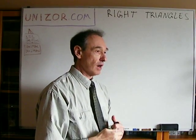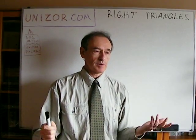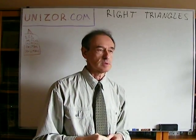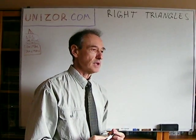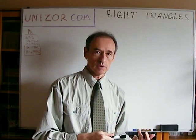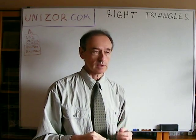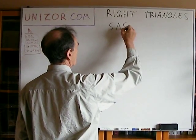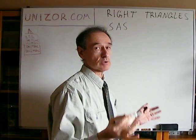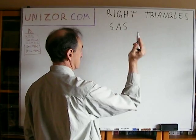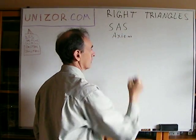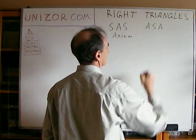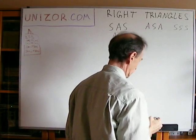Now we are still talking about right triangles, and what's more important about triangles than theorems about their congruence? Let's talk about congruence between two different right triangles. Certain things follow from the general theorems about congruent triangles — or axioms, actually. We have three major statements about congruence of general triangles: side-angle-side, which is an axiom in Hilbert's system; angle-side-angle; and side-side-side, which are theorems.